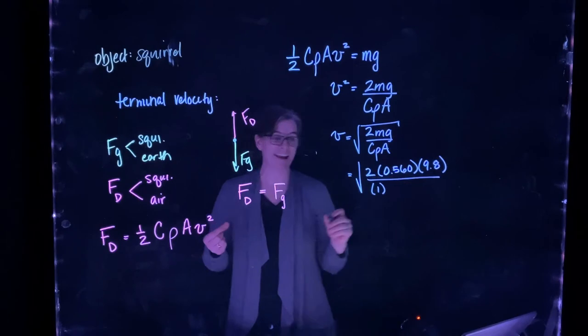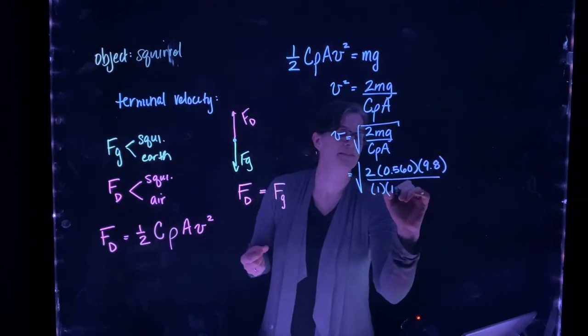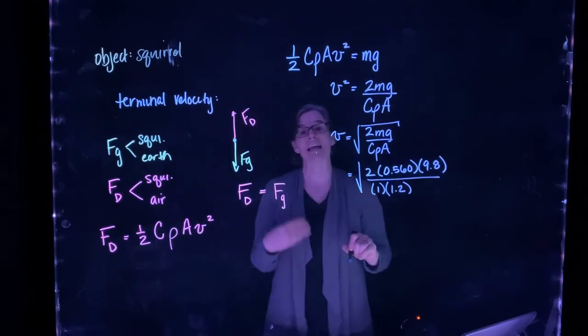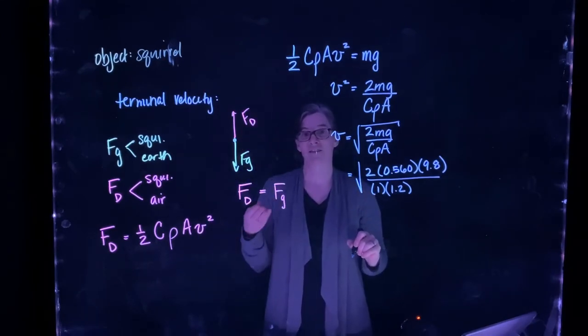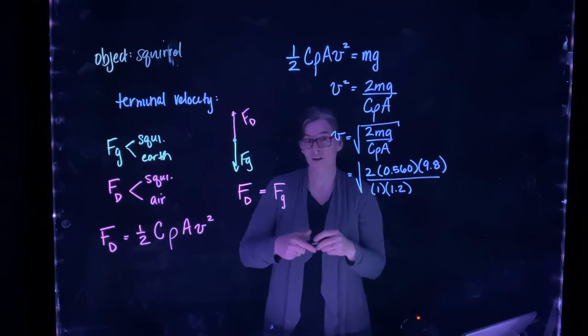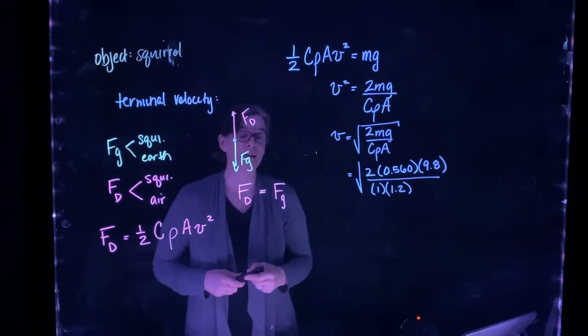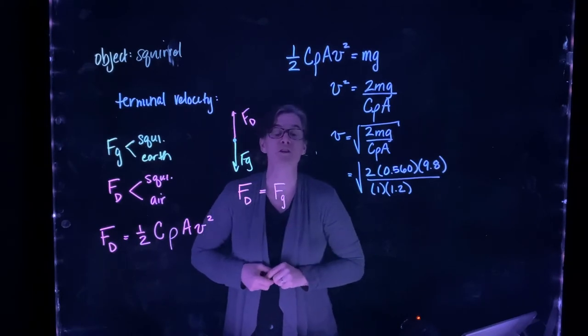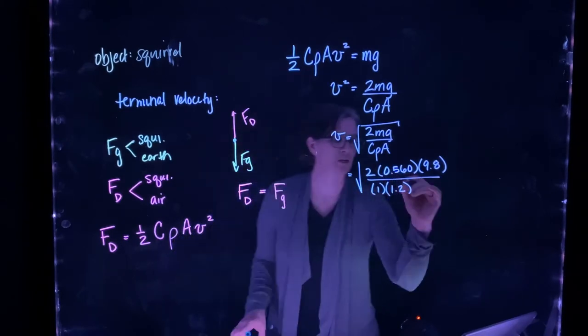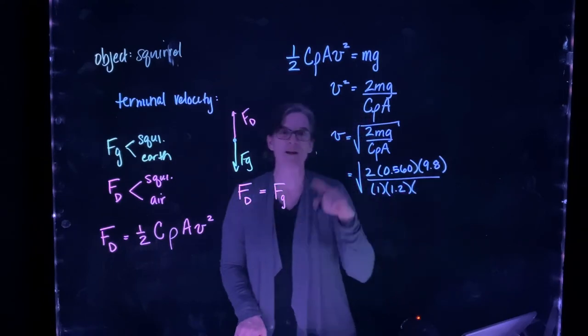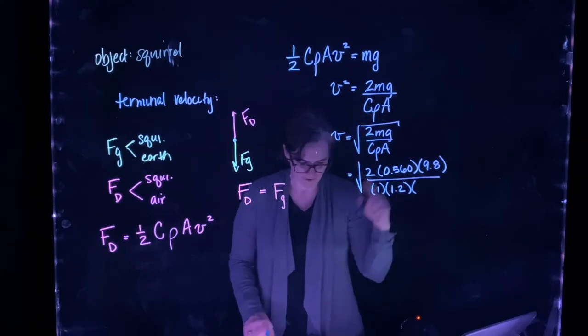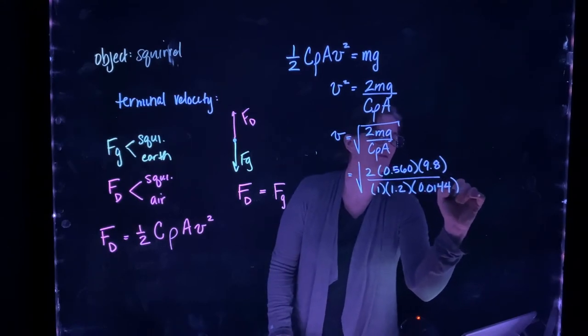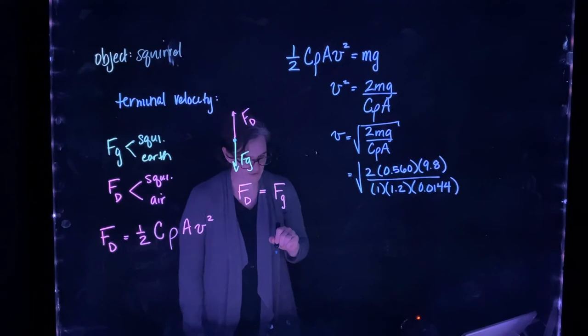We're going to use the density of air in our atmosphere, that's 1.2. The area of the squirrel is 144 cubic centimeters, but we have to convert that to cubic meters. When we convert 144 cubic centimeters to cubic meters, we get 0.0144 cubic meters.